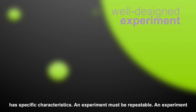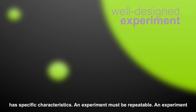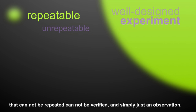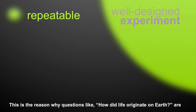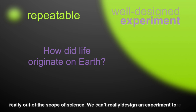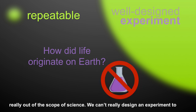An experiment must be repeatable. An experiment that cannot be repeated cannot be verified, and is simply just an observation. This is the reason why questions like how did life originate on Earth are really out of the scope of science — we can't really design an experiment to repeat it.